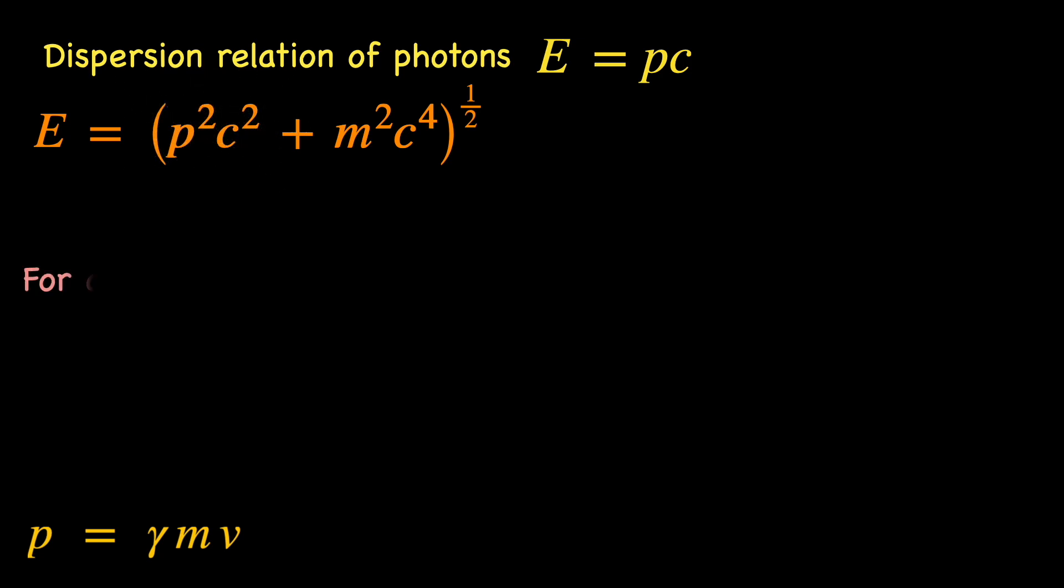Thus, if we use it for a photon which is massless and moves with speed c, the rest energy term goes to 0 but the remaining term p times c takes a 0 divided by 0 form. Look carefully,